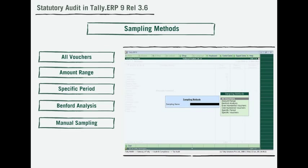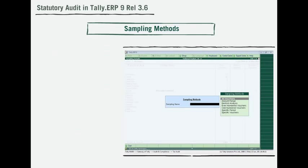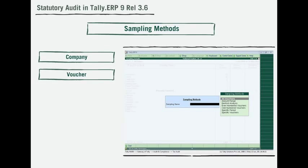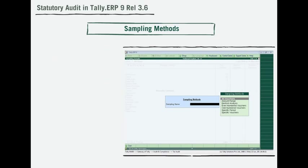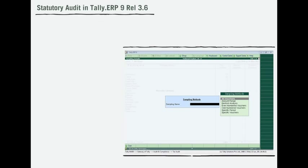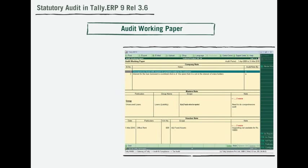As always, Tally provides flexibility by providing various sampling methods such as all vouchers, amount range, specific period, benefit analysis, manual sampling, and more. Further, directly record audit observations at company, voucher, and ledger level during auditing, and Tally will automatically record them in the audit working paper.